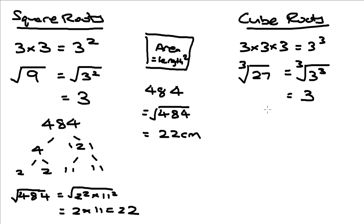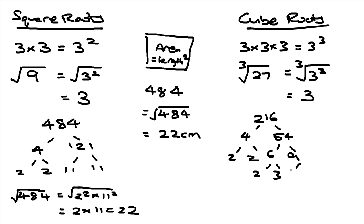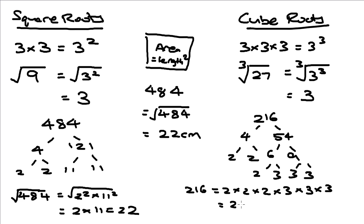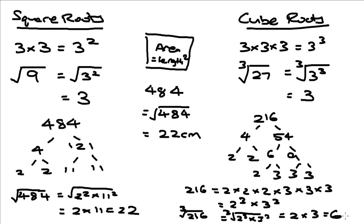With bigger numbers you can likewise use prime factorization. To find the cube root of 216, we find its prime factors: 216 breaks down to 2 and 108, then 2 and 54, then 6 and 9, giving us 2 times 3 and 3 times 3. So 216 equals 2 times 2 times 2 times 3 times 3 times 3, which is 2 cubed times 3 cubed. Therefore the cube root of 216 is 2 times 3, which equals 6.